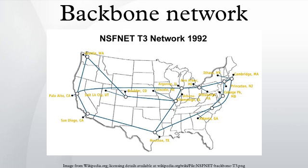A backbone network or network backbone is a part of computer network infrastructure that interconnects various pieces of network, providing a path for the exchange of information between different LANs or sub-networks. A backbone can tie together diverse networks in the same building, in different buildings in a campus environment, or over wide areas.